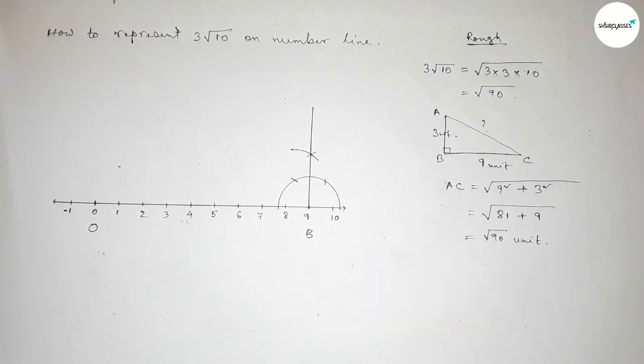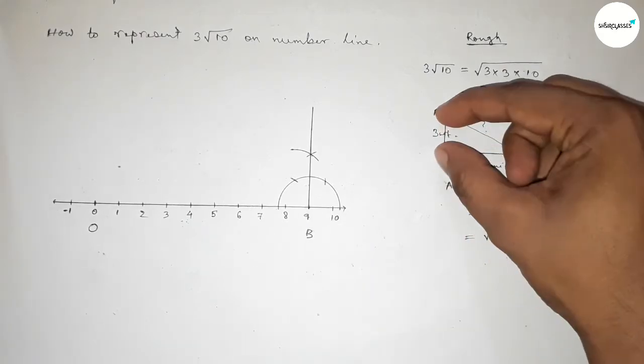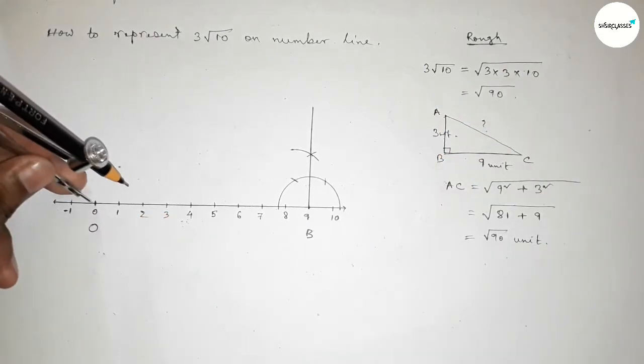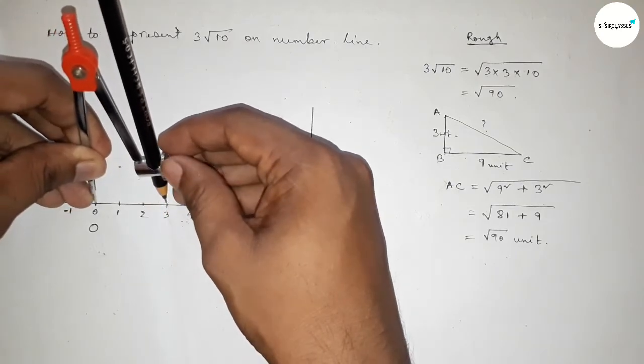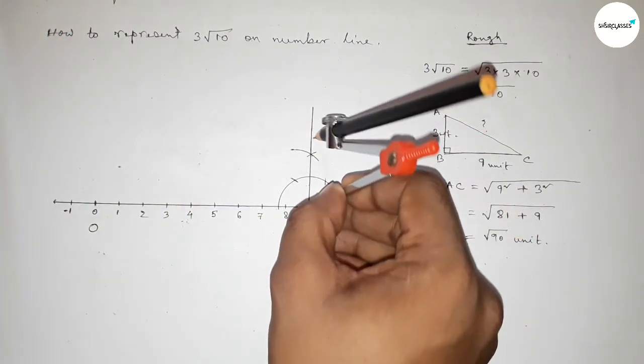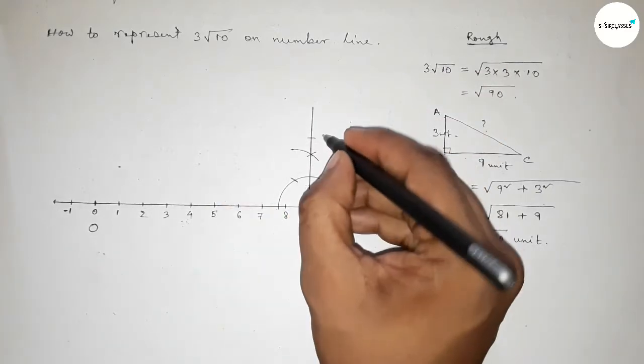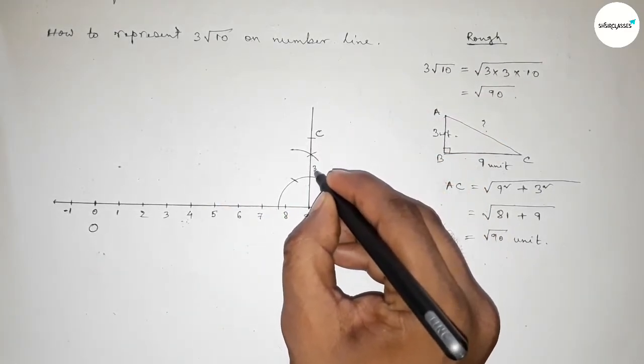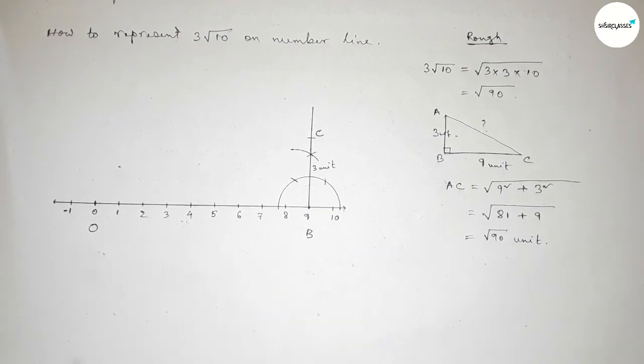So now joining this line to get here a 90 degree angle here. Now taking three unit length. So now taking by compass three unit length and putting the compass here and cut here.